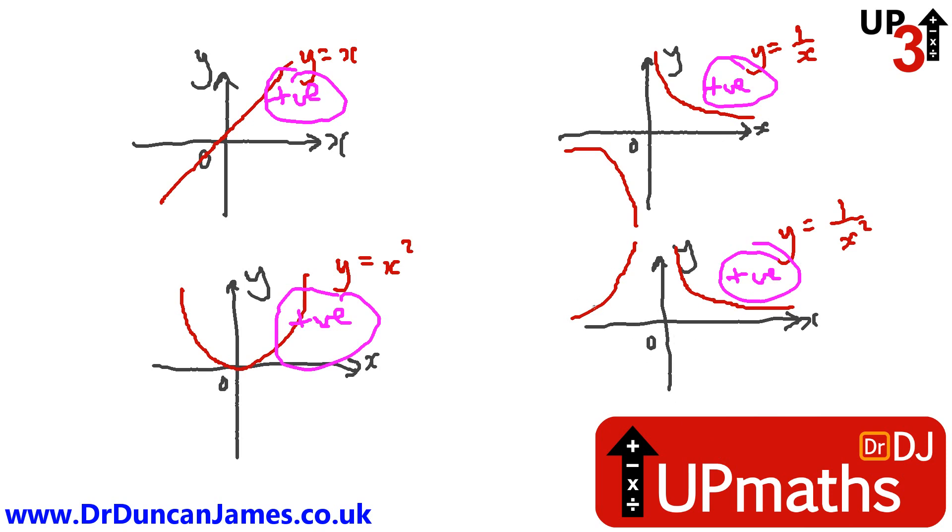Well, how come this is positive here, but then it kind of goes negative here? The reason is because both of the graphs on the bottom involve an x squared, and if you square a negative number, it goes positive. So that's kind of a link between the graph y equals x squared and y equals 1 over x squared.